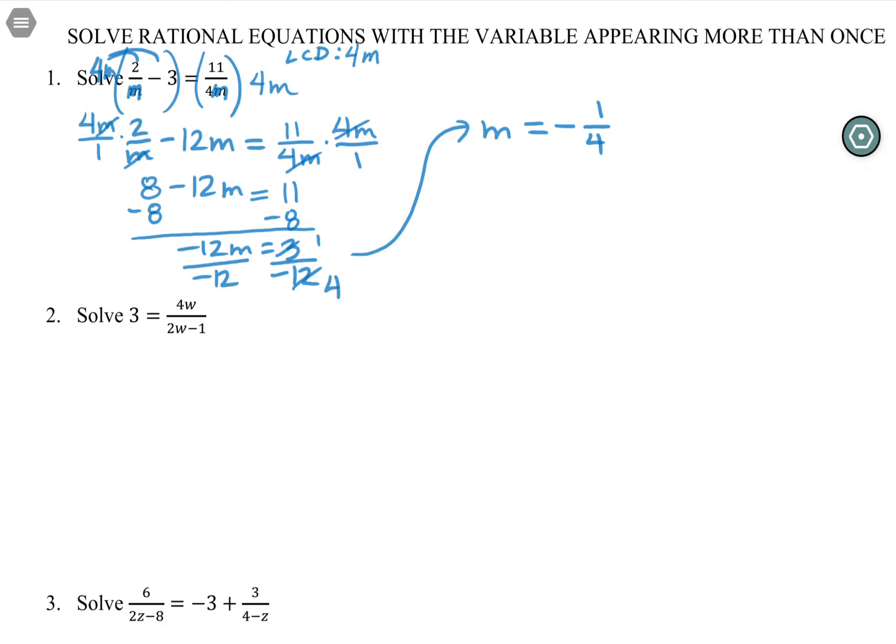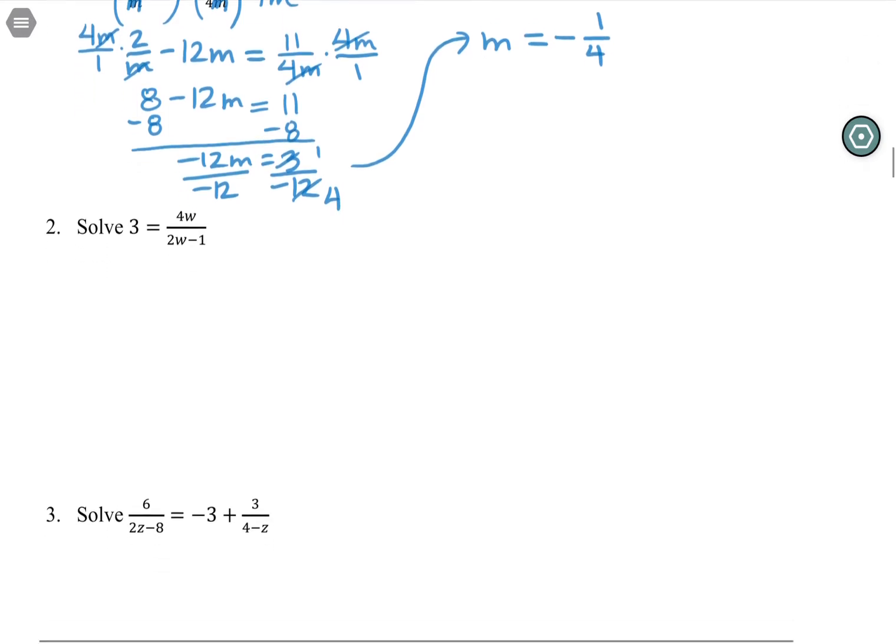So we should be at this point still seeing rational equations that turn into linear equations. As we move on to the next section, we'll start to see rational equations that turn into quadratic equations. So that's the one thing we're saving up right now is what if you can't just get down to one single M in your equation? What if you have M squared and M and you can't combine those? So foreshadowing, but we shouldn't see that yet in this section.